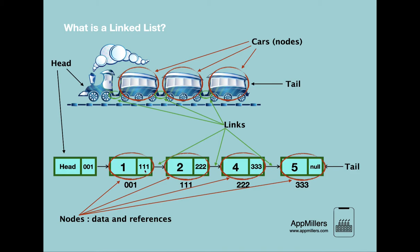So what exactly is a reference? When we allocate an element in memory, it has a physical location. That physical location of the next node is stored in the current node for referencing. For example, if a node's physical location is 111, that location is stored in the previous node. Node 4 has physical location 222, so 222 is stored in the prior node as a reference. When we visit a node, we know the location of the next node from the current node's stored reference.